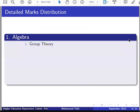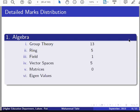In algebra: Group Theory — 13 MCQs. Ring Theory — 5 MCQs. Field Theory — 1 MCQ. Vector Spaces — 5 MCQs. Matrices and Eigenvalues — in the 2011 paper there were 4 MCQs; there were no MCQs from this topic in 2015, but you can include matrices and eigenvalues. Total for algebra: 24.